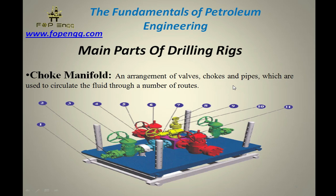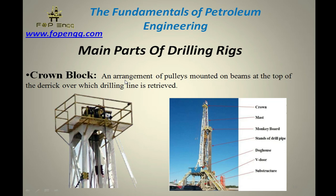Choke manifold — this is basically an arrangement of valves. There are so many valves and chokes available there. The assembly of valves is known as the choke manifold. It is basically used to control the fluid. The purposes of the choke manifold are: to control the fluid, to divert the fluid in any direction, to take samples from the sample point, and to check our pressures — the upstream pressure — and control the fluid from the choke manifold.